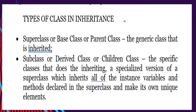We have two types of classes in inheritance: the superclass, also called base class or parent class — this is the generic class that is inherited — and the subclass, also called derived class or children class. These are the specific classes that are doing the inheriting, so whatever characteristics the parent class has can be inherited by the subclass.